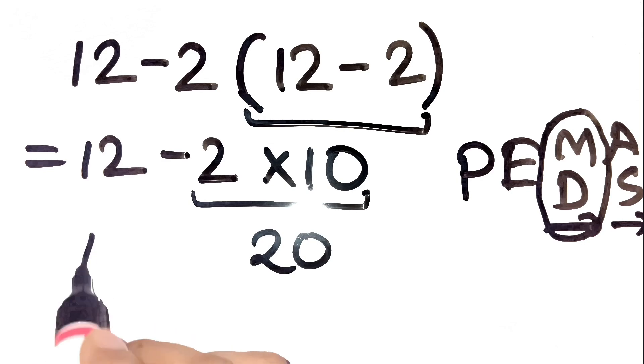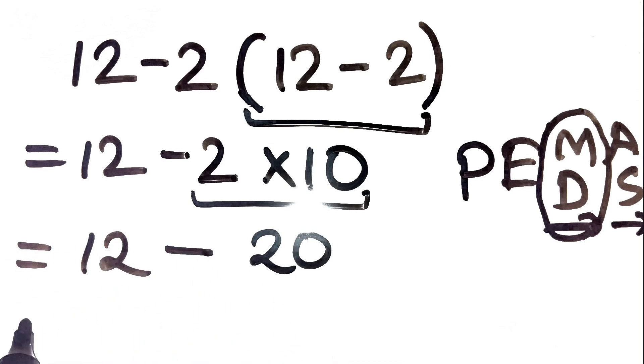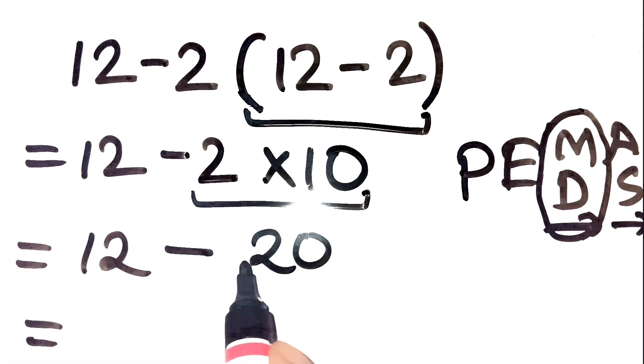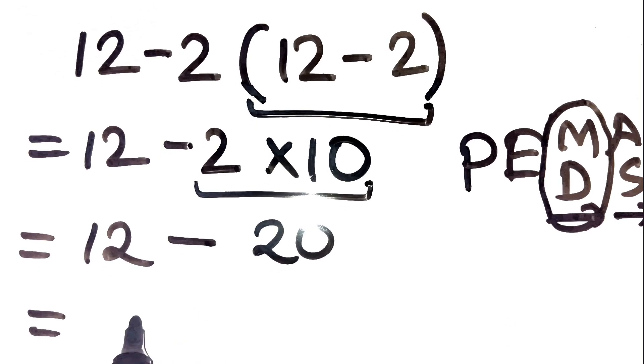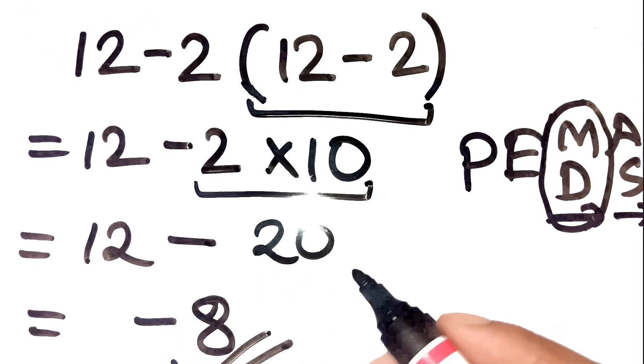Now we have 12 minus 20. Step 3: Finish with subtraction. 12 minus 20 equals negative 8. So, the correct answer is negative 8.